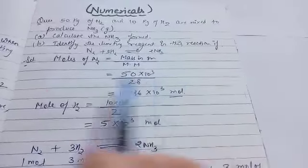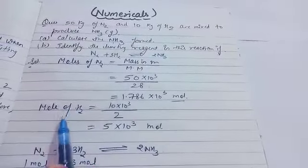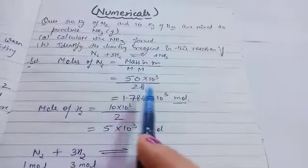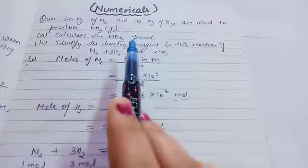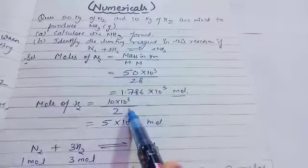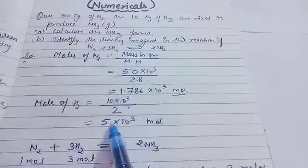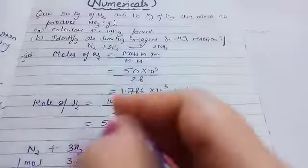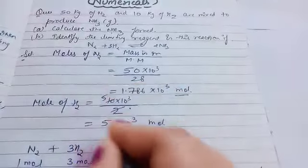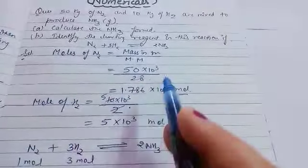Next, moles of hydrogen = given mass in grams ÷ molar mass. Mass = 10 kg, converted to grams = 10,000 g. Molar mass of H₂ = 1 × 2 = 2. So moles of H₂ = 10,000 ÷ 2 = 5 × 10³ mol.